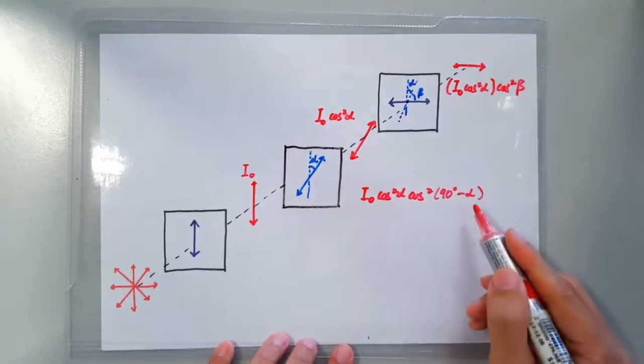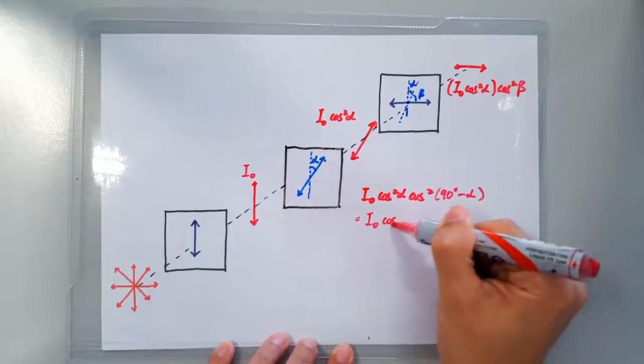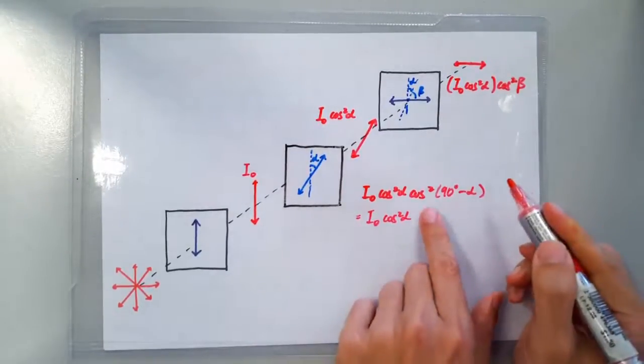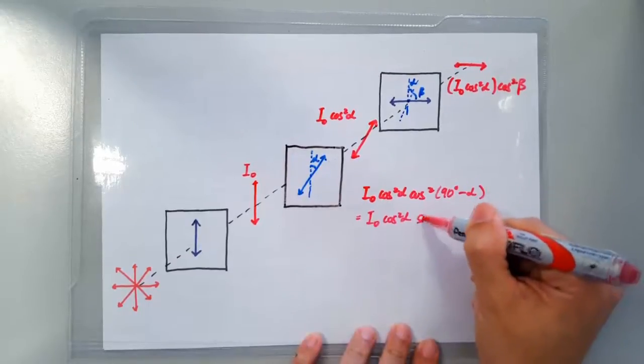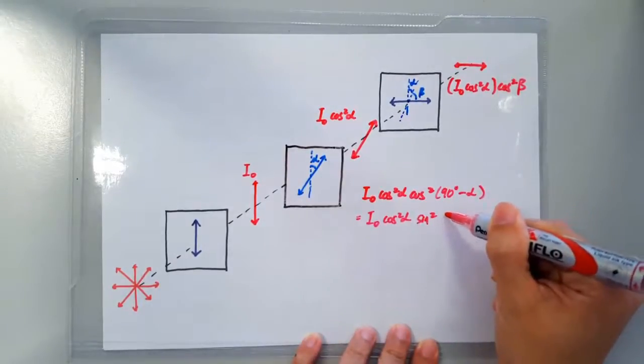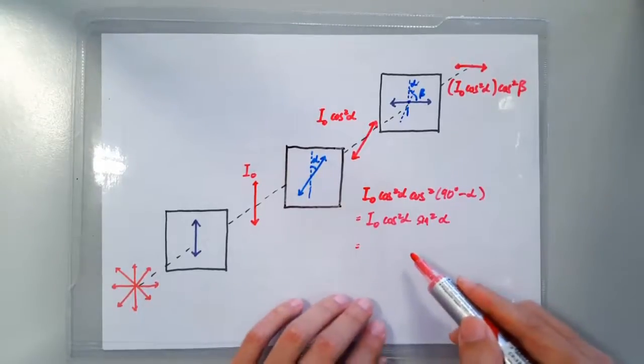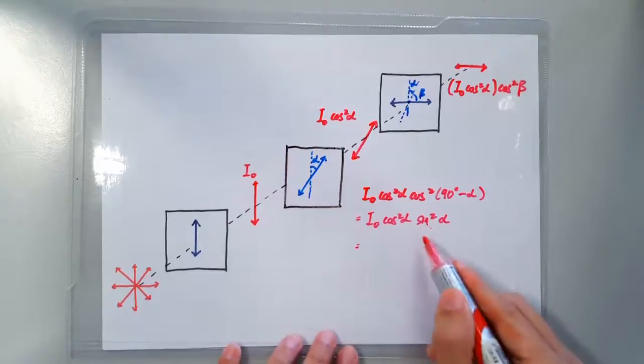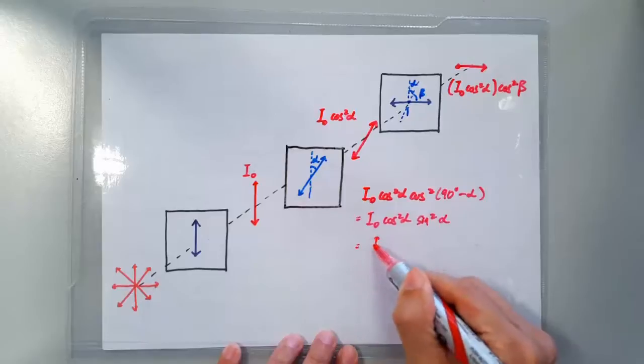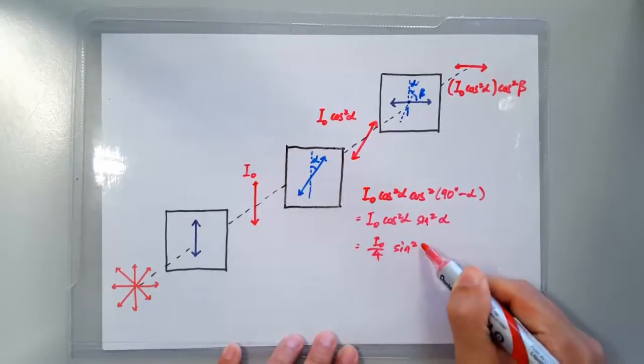If you know your trigonometric identity, you know that you can write this as I₀ cos² alpha. Cos(90° - alpha) is actually sin alpha. So it's going to look like this. Now remember another trigonometric identity sin(2α) is actually 2sin(α)cos(α), right? So I can write this as I₀/4 sin²(2α).